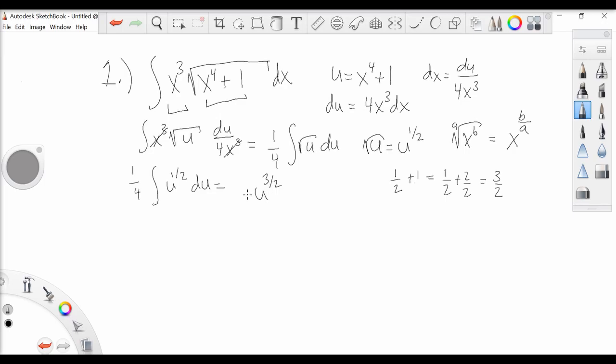You can work it out, but you're basically just flipping the fraction, so we get two-thirds. We can't forget our one-fourth out front. This is an indefinite integral, so there's some ambiguity on where it lies exactly on the graph. We need to add our plus c.